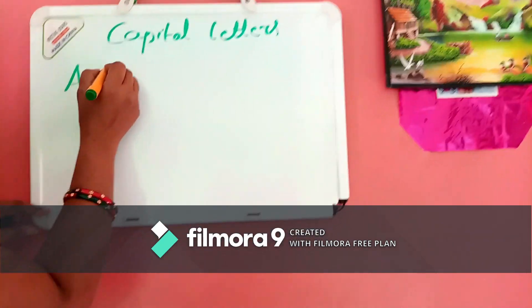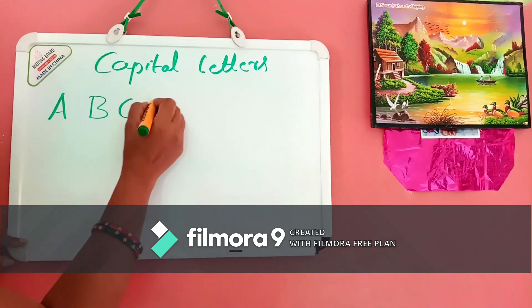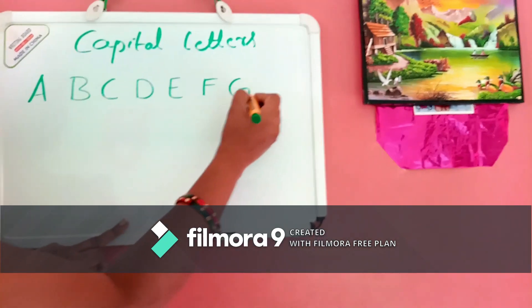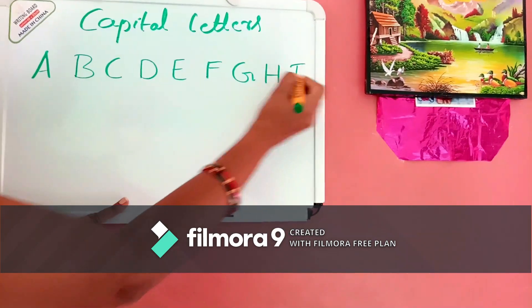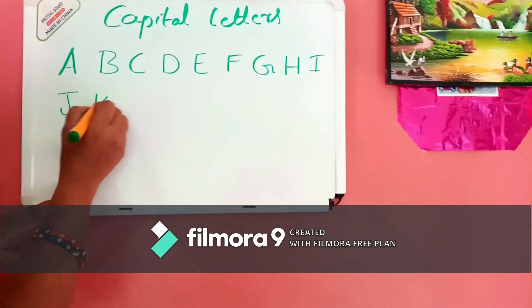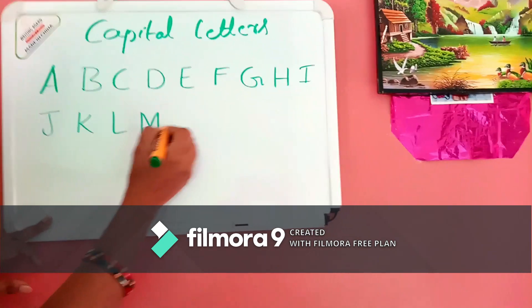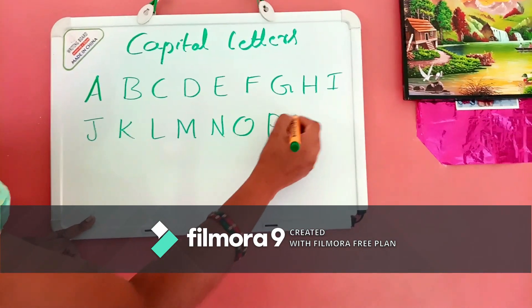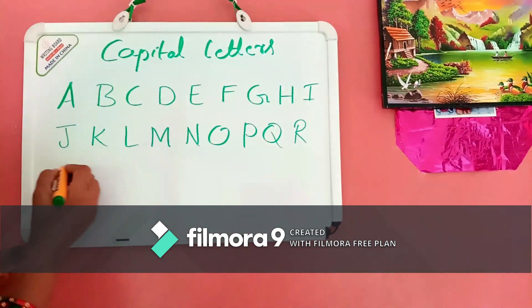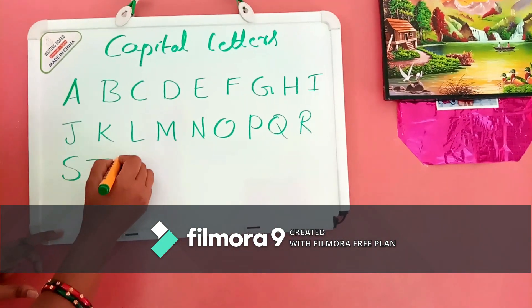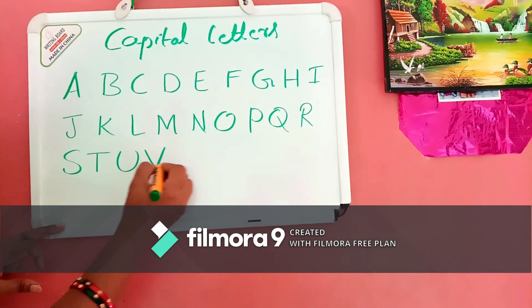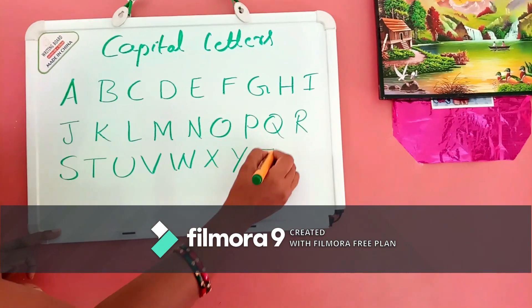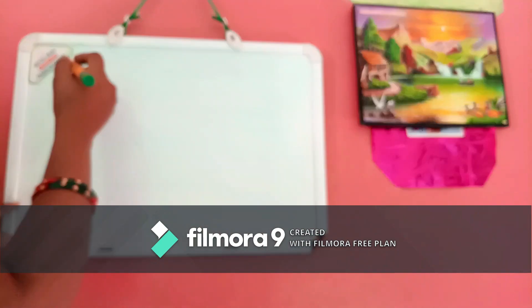A, B, C, D, E, F, G, H, I, J, K, L, M, N, O, P, Q, R, S, T, U, V, W, X, Y, and Z. Next, come to small letters.